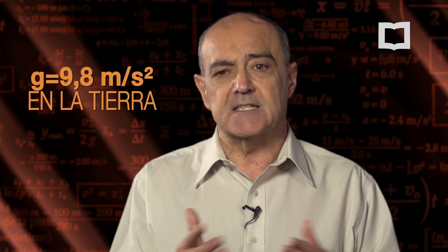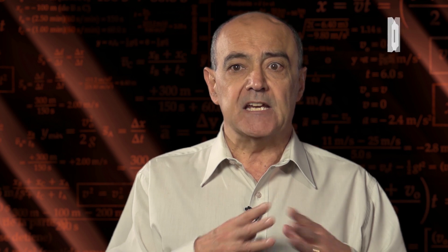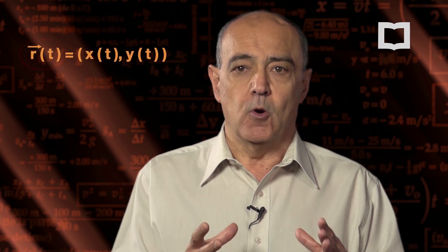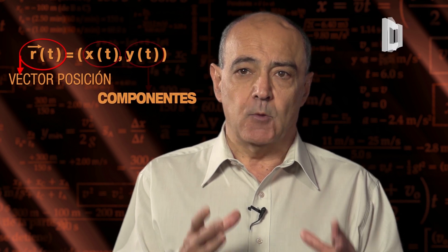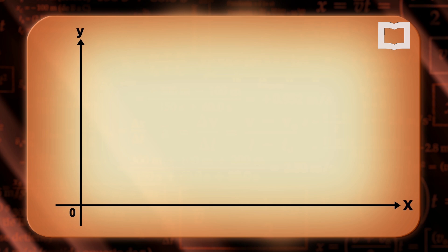Nosotros en nuestro curso vamos a utilizar el valor de 10 metros sobre segundo cuadrado para simplificar nuestras cuentas. Para describir totalmente el movimiento de un proyectil, vamos a necesitar definir las ecuaciones horarias, lo que significa conocer cómo evoluciona el vector posición en un sistema de referencia. Ese sistema de referencia va a ser bidimensional, con una coordenada horizontal y una coordenada vertical: un eje de coordenadas cartesianas.